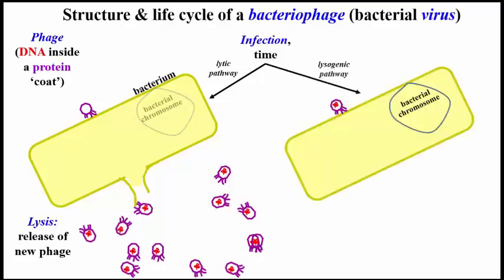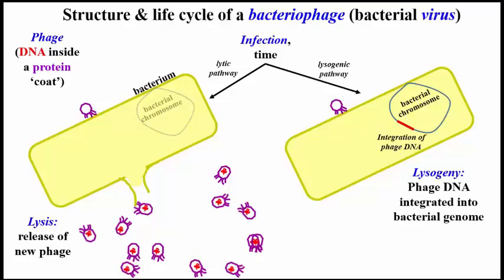Alternatively, after attaching to the bacterial cell, the phage can instead undergo lysogeny. In this case, after the DNA is in the infected cell, it approaches the bacterial chromosome and integrates into the bacterial genome, after which the phage DNA will replicate along with the bacterial chromosome — this is the lysogenic pathway. If adverse environmental conditions stress the bacterium, the integrated phage can excise from the chromosome and re-enter the lytic pathway, thus escaping a possibly painful fate of the bacterium.